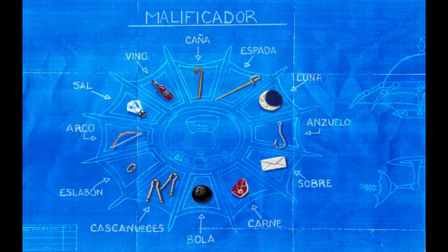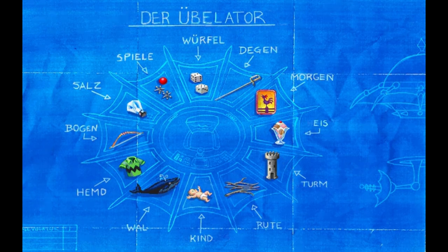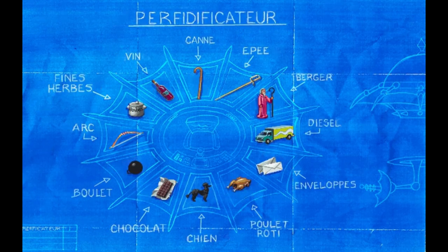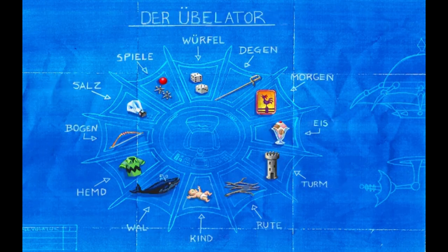The items collected had to make sense for the malevolator's counterparts in those languages, so different malevolator parts were drawn in. For example, in German, where you put in the nuts, it made more sense to have a whale, because the German word for whale is 'Wal,' which is part of the German word for walnuts, 'Walnüsse.'